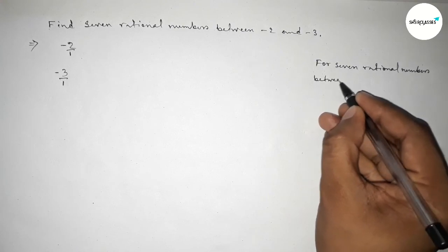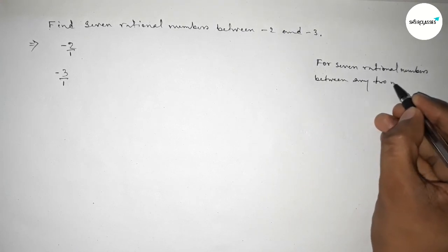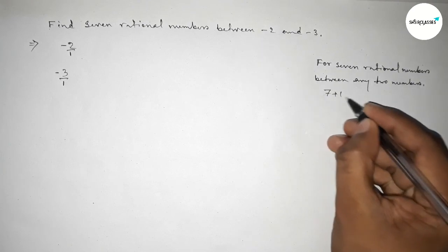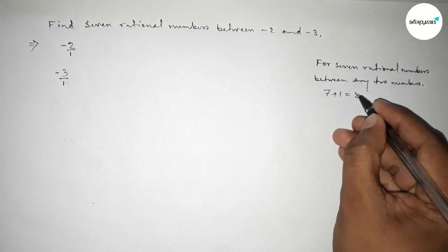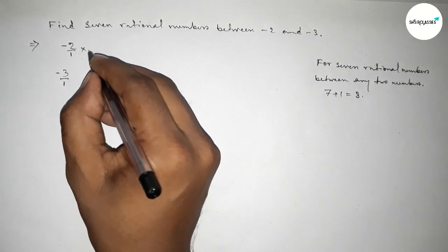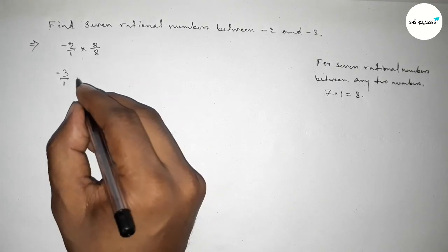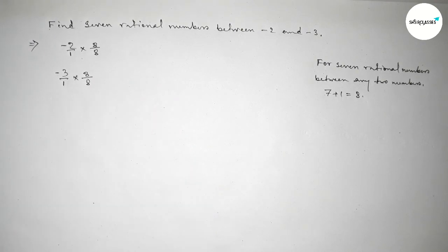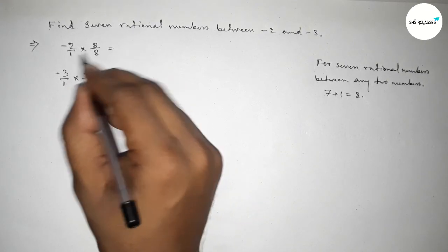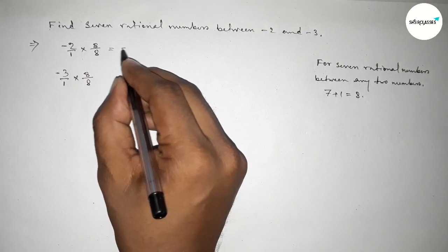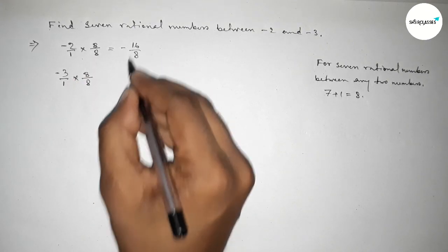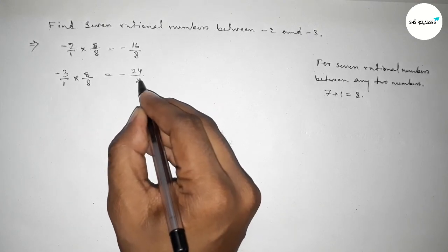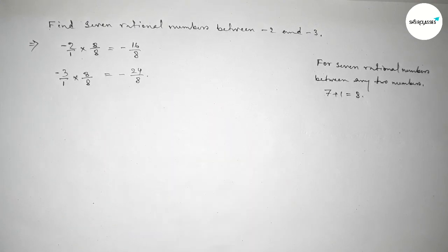Now discussing an important method: for finding seven rational numbers between any two numbers, we have to multiply both numbers by 7 plus 1, equal to 8. So we multiply both by 8, giving us minus 16 over 8 and minus 24 over 8.